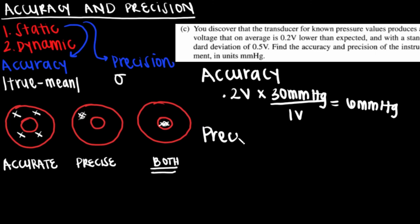The precision is also given in volts, which can be inferred from the language, standard deviation of 0.5 volts. Again, using the sensitivity, we can find the value for absolute precision in terms of millimeters mercury.